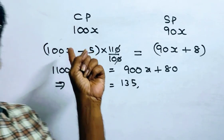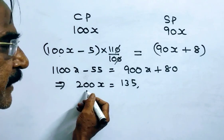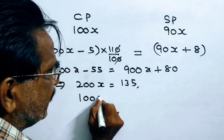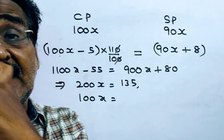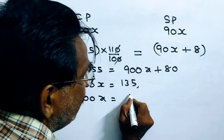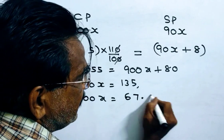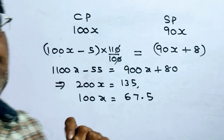Friends, our cost price is 100x. So, 100x is equal to 135 by 2. Half of 135 is equal to 67.5. So friends, cost price is Rs.67.5.